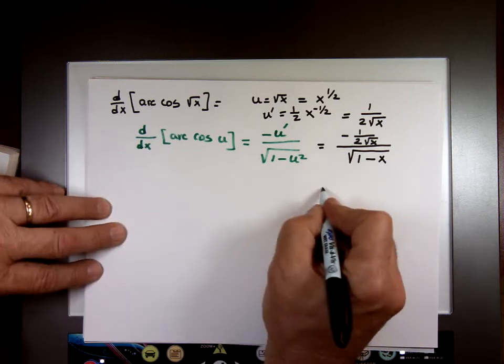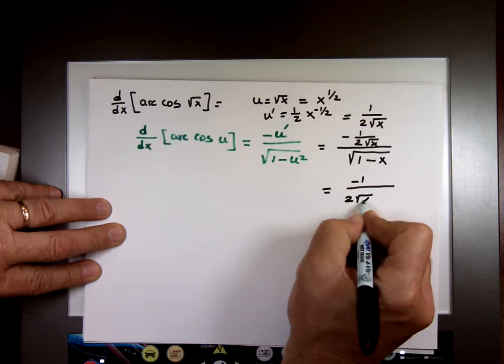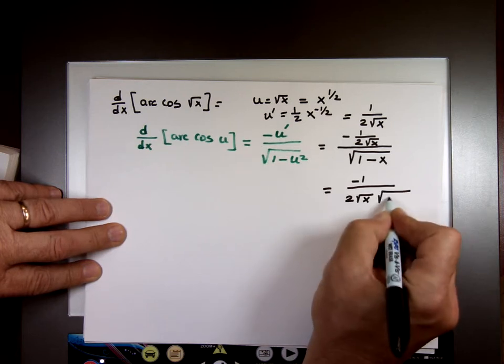And algebraically, if you simplify this, it's going to be negative 1 over 2 times the square root of x times the square root of 1 minus x.